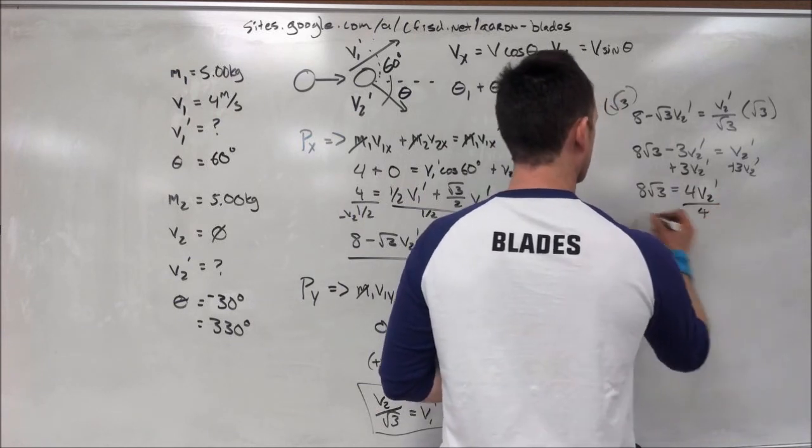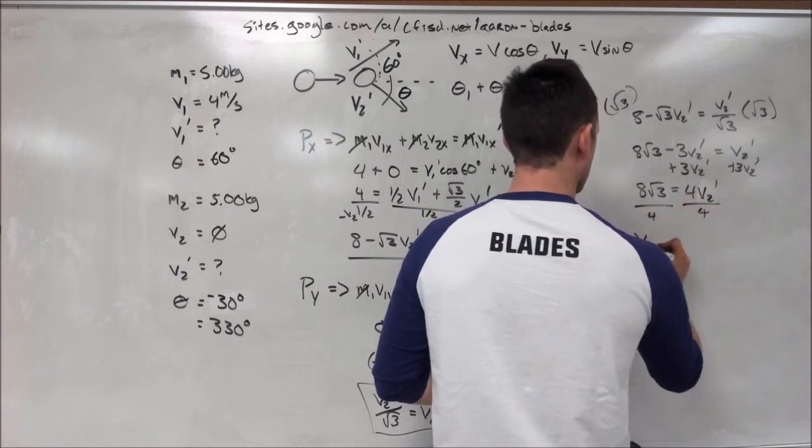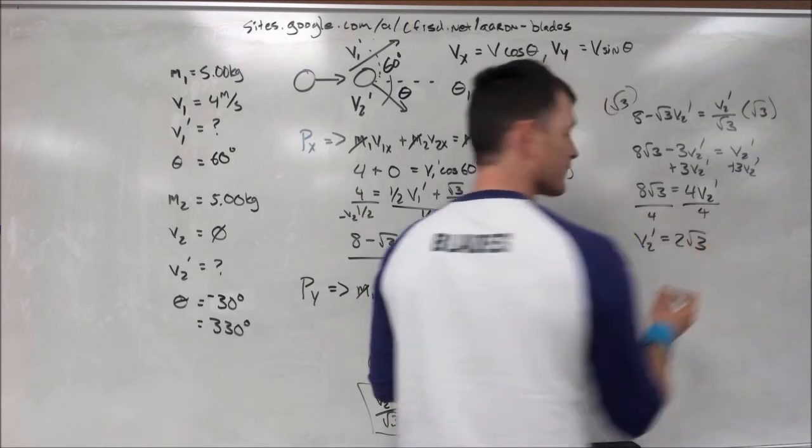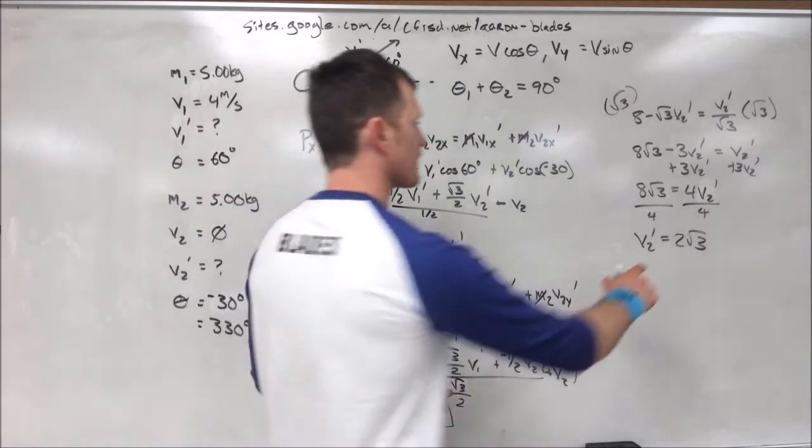That gives us 8 square root of 3 equals 4 v2 prime. And if we divide both sides by 4, we get v2 prime is equal to 2 times the square root of 3 meters per second.